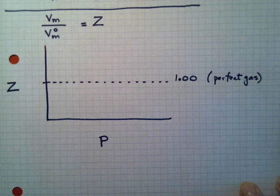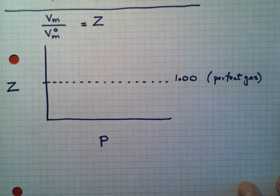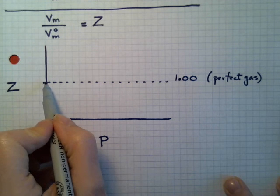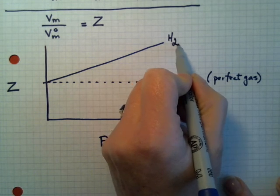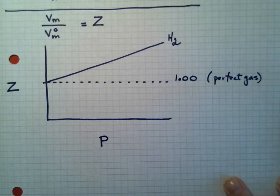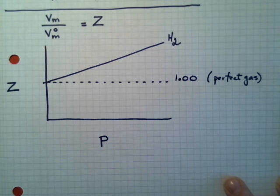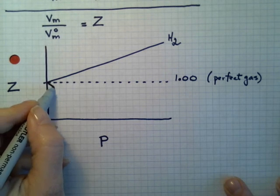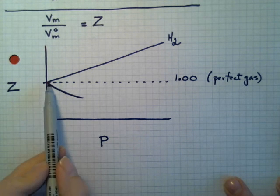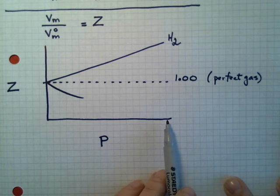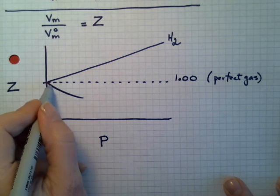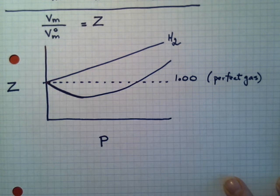What would this function look like for a gas that has net repulsive forces all the time? Our exemplary gas there is H2. It takes off from 1 and just goes straight up. That's what the hydrogen gas looks like. The Z value is greater than 1 for all of these pressures. Now for an easily compressed gas, we have something like this. But it can't keep descending, because if the pressure is getting greater and greater, at some point these molecules have to exhibit net repulsive forces. And so even for these, they ultimately do this.